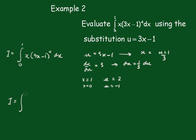i equals the integral from minus 1 to 2 of u plus 1 over 3, times u to the 4th, times 1 third du.